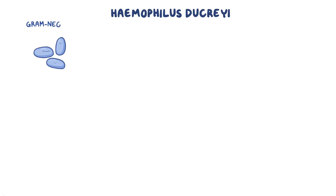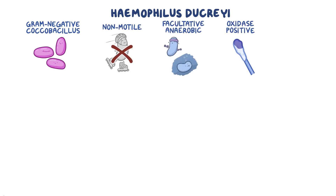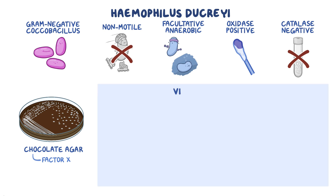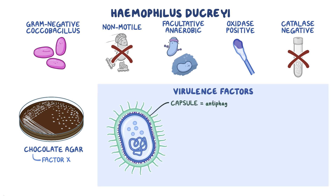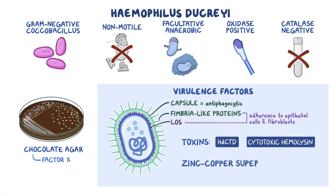As a quick recap: Haemophilus ducreyi is a gram-negative coccobacillus that is non-motile, facultatively anaerobic, oxidase positive, and catalase negative. It requires special conditions to grow, such as chocolate agar with Factor X, forming small gray or translucent colonies. Its virulence factors include a capsule with an antiphagocytic role, fimbria-like proteins and LOS for adherence to epithelial cells and fibroblasts, toxins such as cytolethal distending toxin and cytotoxic hemolysin which cause cell damage, and copper-zinc superoxide dismutase which helps the bacteria survive.